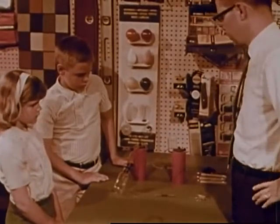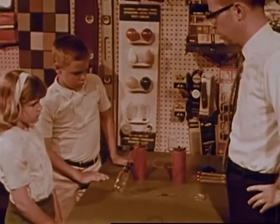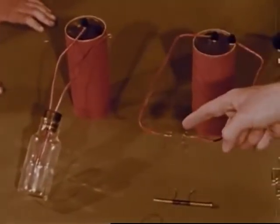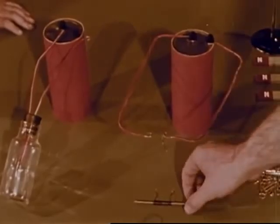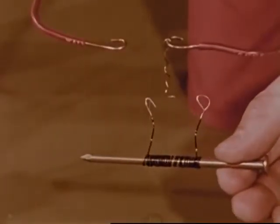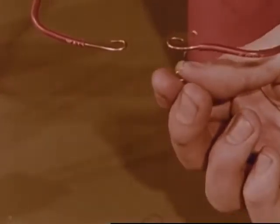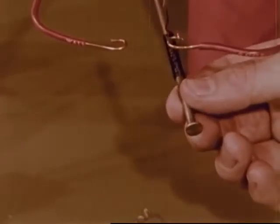Mr. Grant tells Frank and Joan that so far they've seen that electricity can make light and that it can make heat. Now Mr. Grant is going to try something else. He's wound some wire around a nail. In place of the wire that produced heat, he's connecting the wire wrapped around the nail.